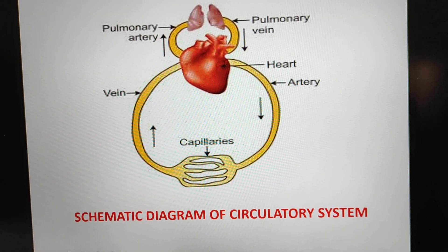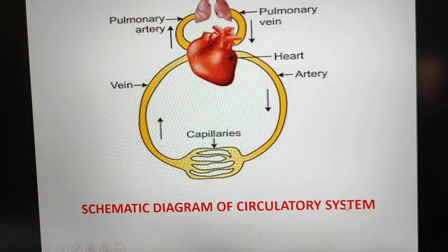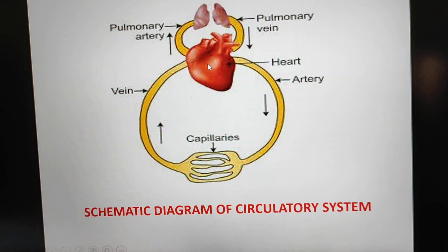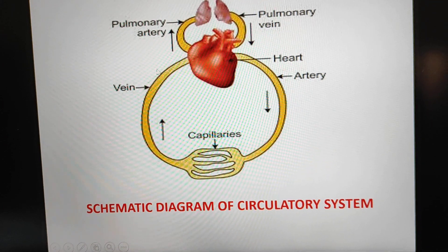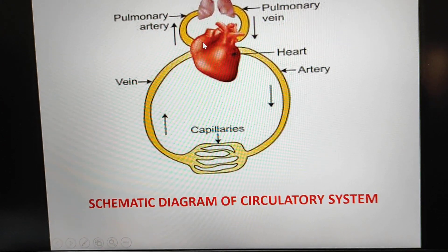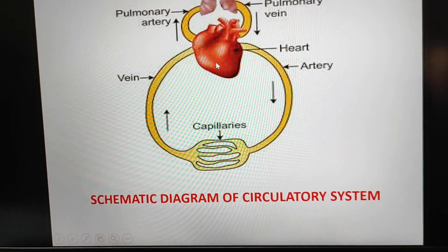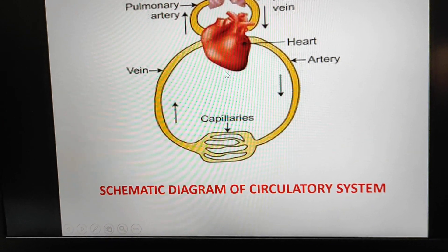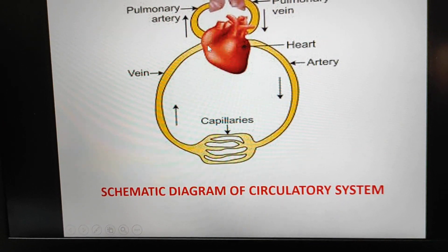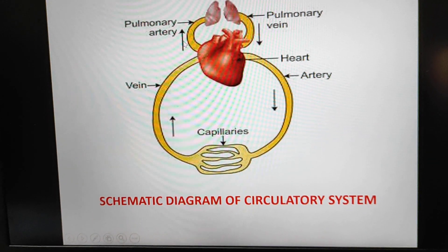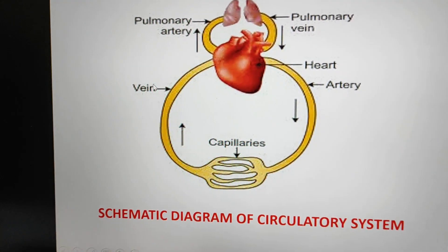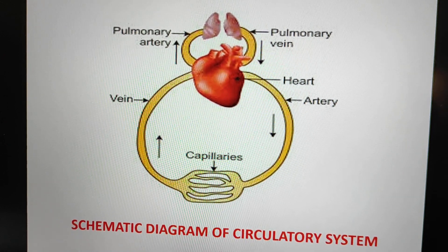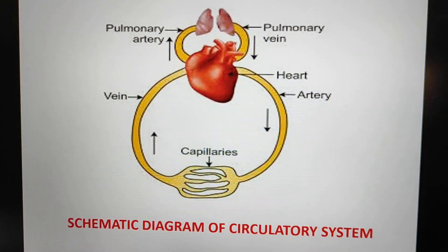After that, the deoxygenated blood goes through the veins back into the heart. It goes into the right auricle first. Then when the right auricle contracts, the blood pushes into the right ventricle, and from the right ventricle through the pulmonary artery, this deoxygenated blood goes back into the lungs for oxygenation.